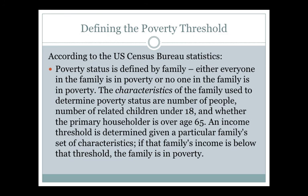How would we measure poverty? The poverty threshold was first introduced in 1963, and it's defined by family. If we say a particular household is living underneath the poverty threshold, we're talking about the family that exists in that household, whether it be one person, three people, or more or less. So, everyone in the family is either in poverty, or no one in the family is in poverty. We're really looking at the characteristics of the family to determine whether or not they are living below the poverty threshold.